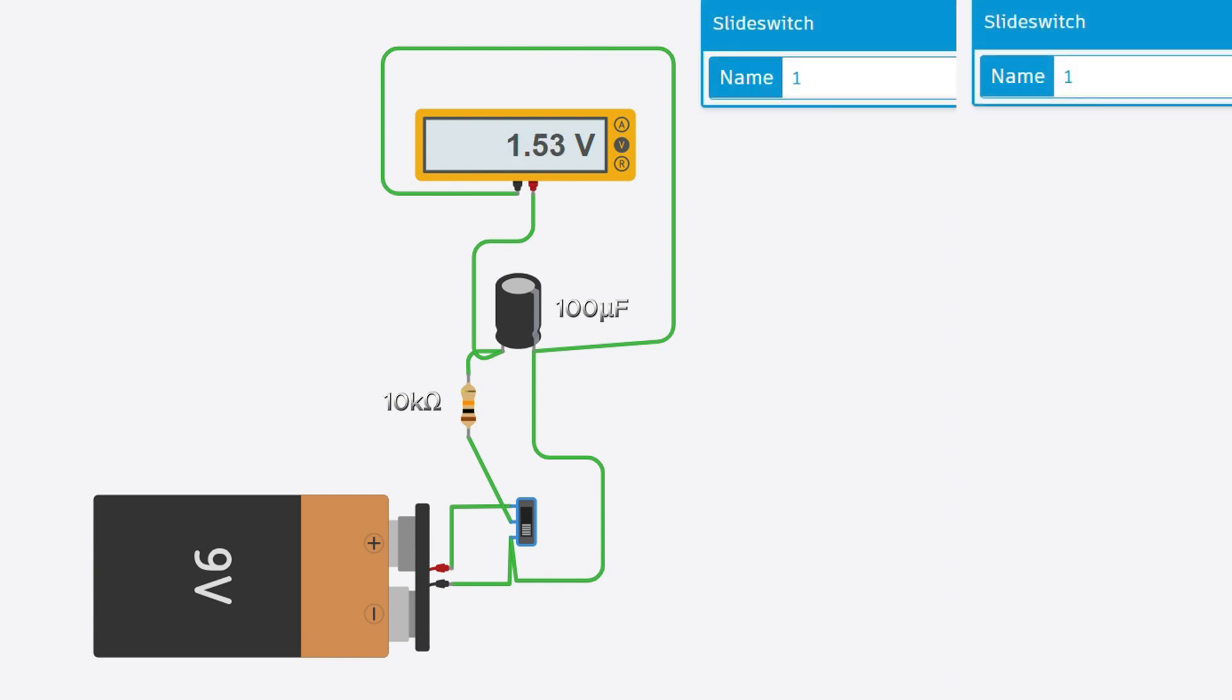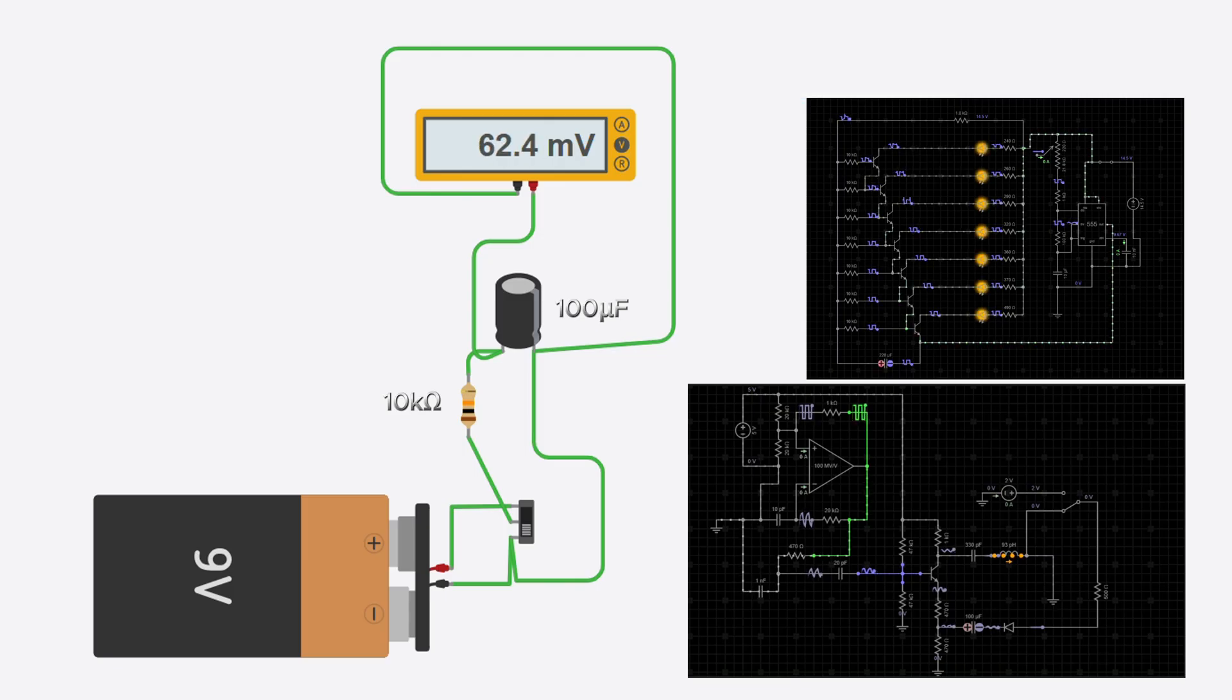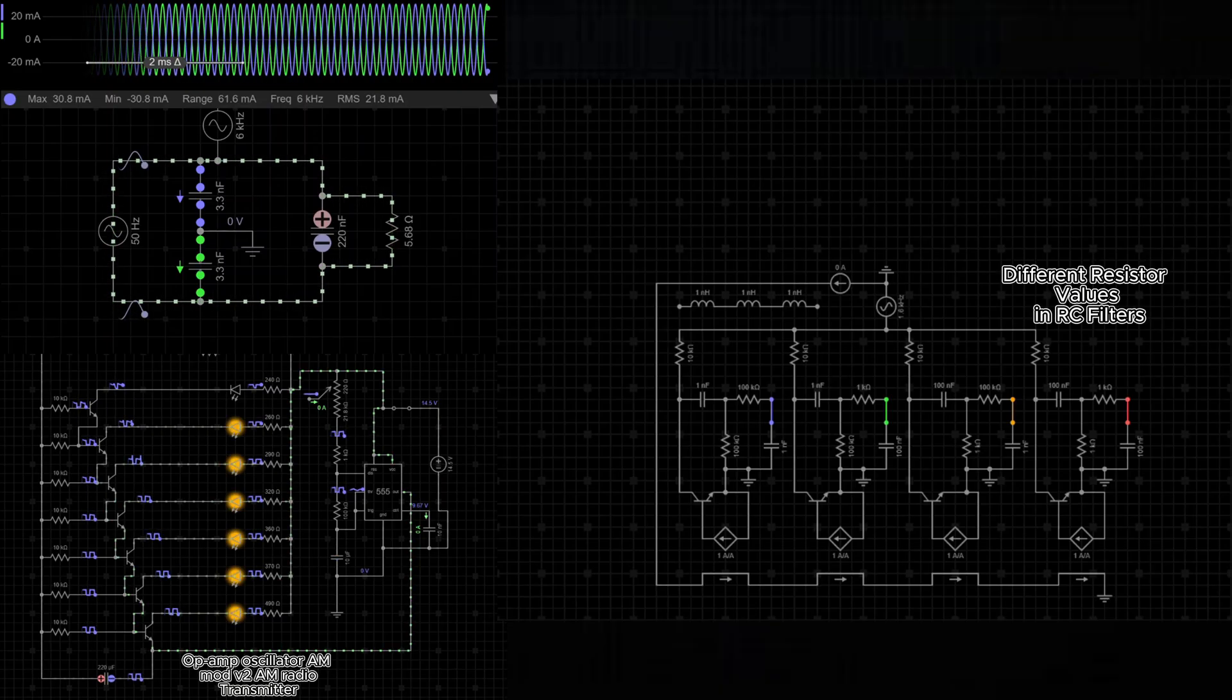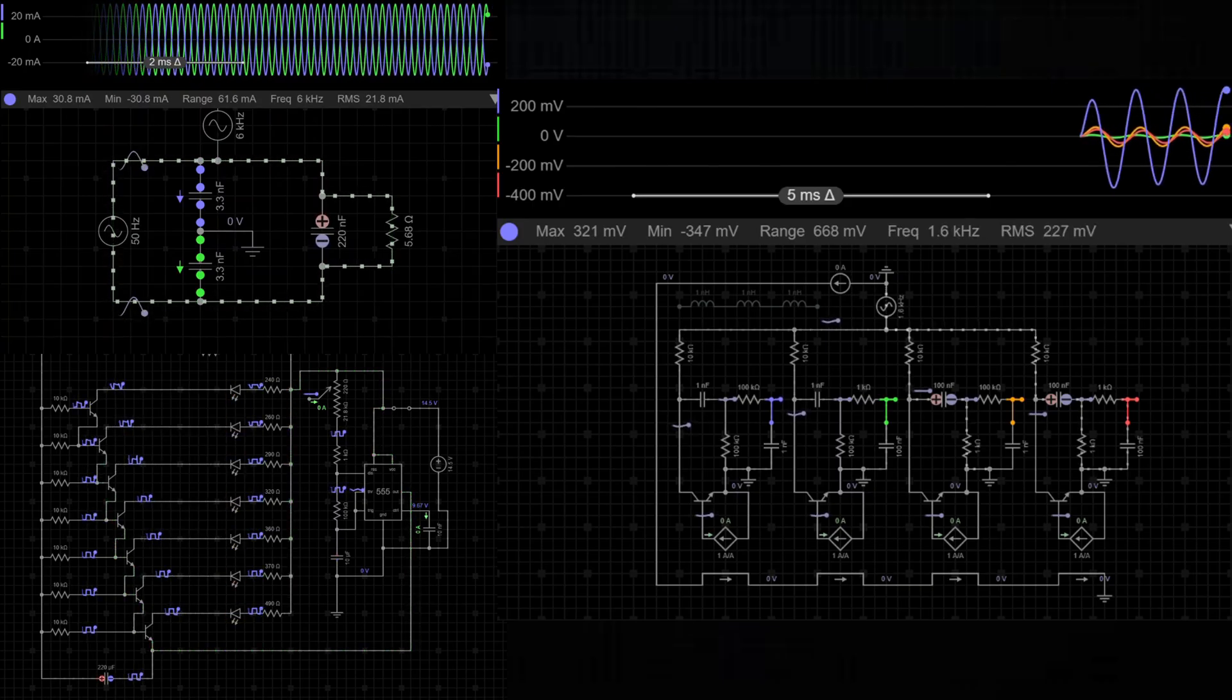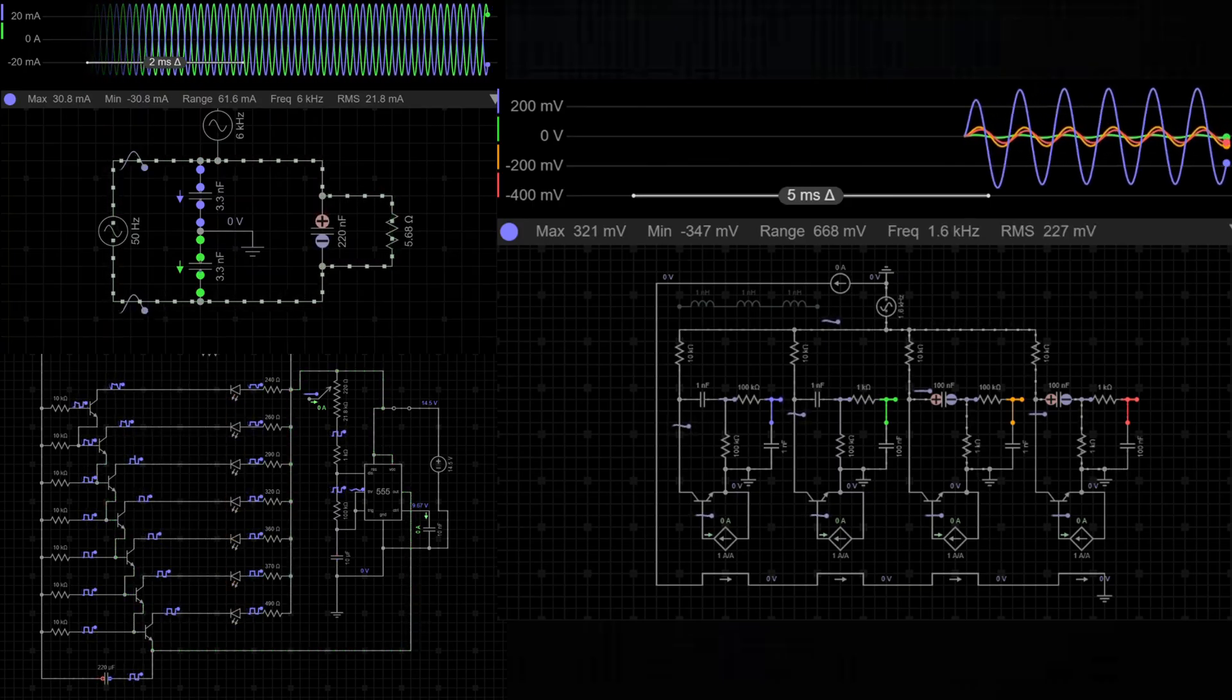RC circuits have numerous applications. They're used in timing circuits, like blinkers or oscillators, and in filtering signals, such as removing noise from audio signals. For example, an RC circuit can control the blink rate of an LED or filter out unwanted frequencies in an audio signal.